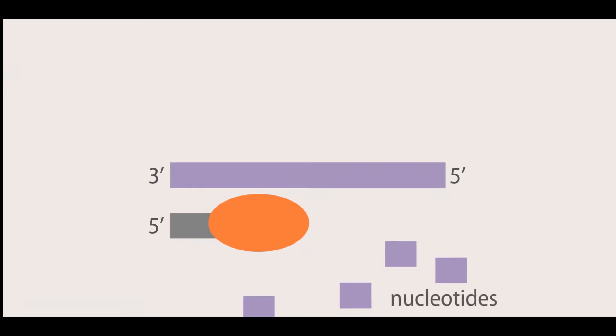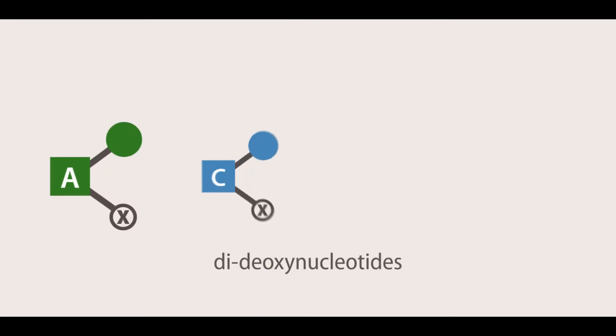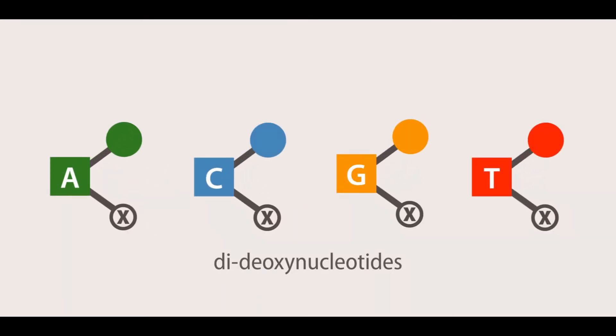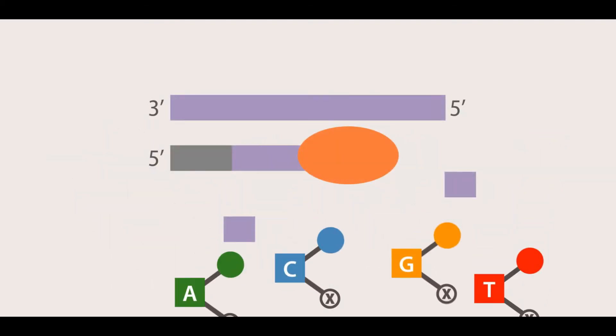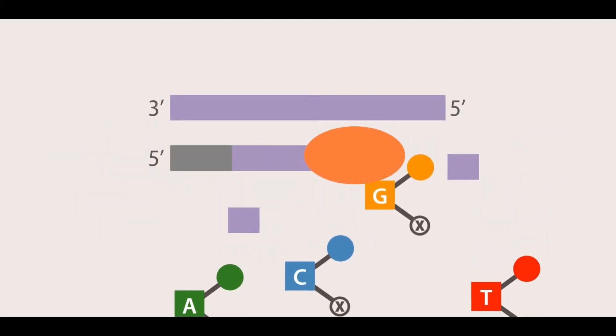Deoxynucleotides or simply nucleotides are added one after the other in a template-dependent manner. Each reaction also contains a mixture of four dideoxynucleotides, one for each DNA base. These dideoxynucleotides resemble the DNA monomers enough to allow incorporation into the growing strand.